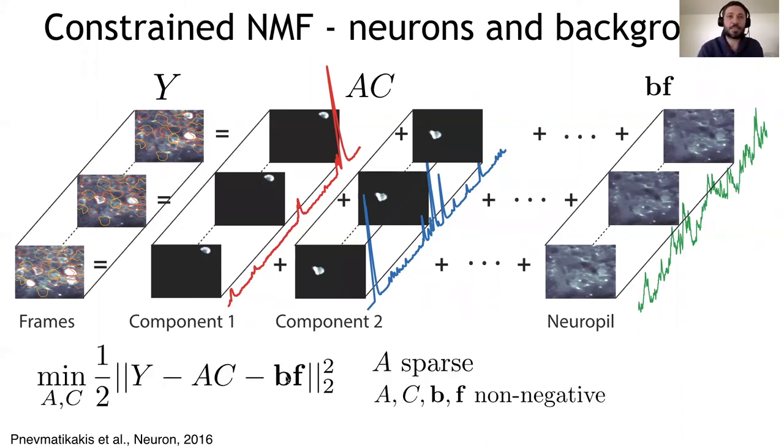And this is true both for the components of neurons that we call A and C and for the background. In mathematical terms, what we are solving is this non-negative matrix factorization problem in which we approximate Y with the sum of AC and BF. There are some features that are associated to these matrices. For instance, one is sparse. So the spatial components will be sparse. What does it mean sparse? It means that only few pixels in all these frames are going to be non-zero. And the other important characteristic is that all of the components will be non-negative because we don't expect to have photons are positive, of course.